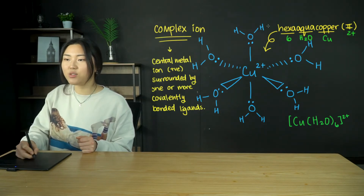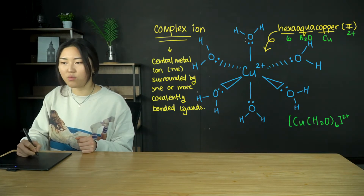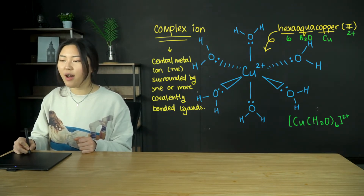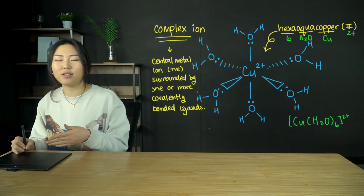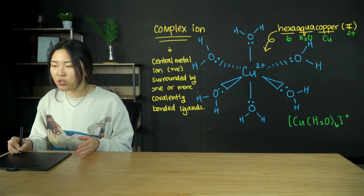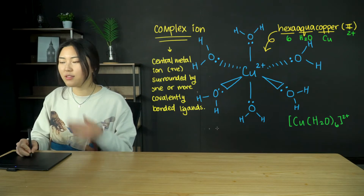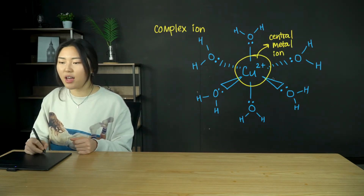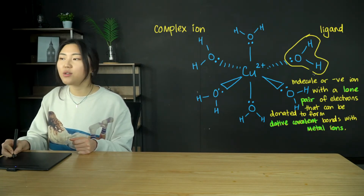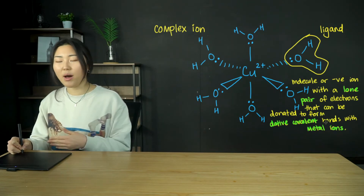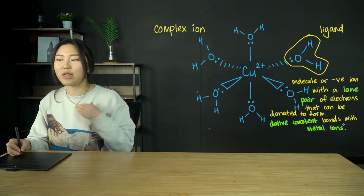There are 6 water ligands surrounding the central metal ion — 1, 2, 3, 4, 5, 6. That is hexa-aqua, and the central metal ion is copper 2+. The chemical formula is written in square brackets because it's a complex ion: [Cu(H2O)6]2+. The overall charge is 2+ because Cu has 2+ and water doesn't contribute any charge. A ligand is a molecule or negative ion with a lone pair of electrons that can be donated to form dative covalent bonds with metal ions.